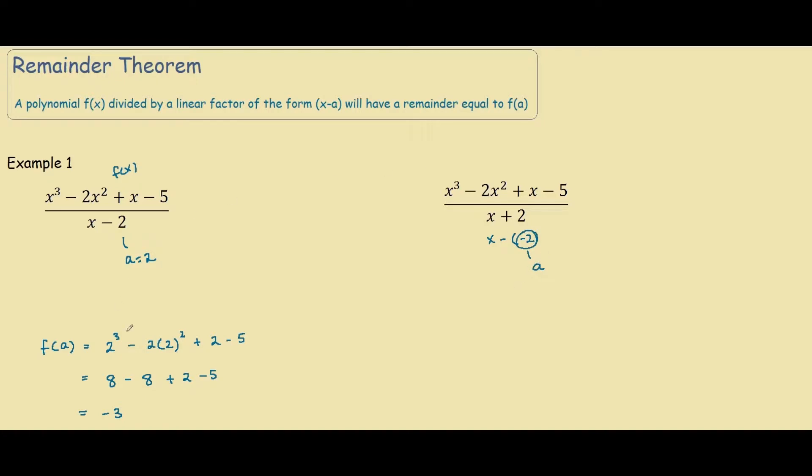And we go through the same steps over here to solve this problem using the remainder theorem. So we actually have f(a) equals to f(-2) which equals to negative 2 cubed minus 2 times negative 2 squared plus negative 2 minus 5.